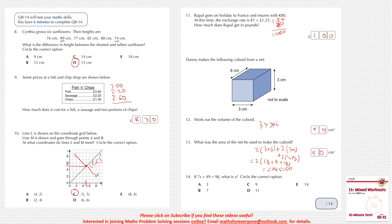The next question: 7x + 49 = 98. What is x? x = (98 − 49) ÷ 7 = 49 ÷ 7 = 7. So x = 7, and the answer is B.